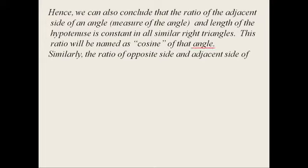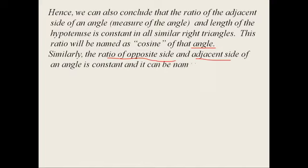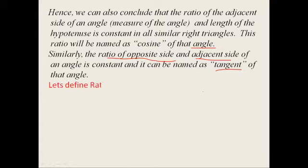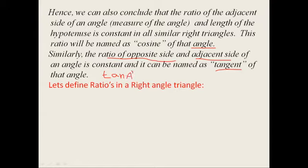Hence we can also conclude that the ratio of the adjacent side of an angle to the length of the hypotenuse is constant in all similar right angle triangles. This ratio is named cosine of that angle. There is no meaning for cosine without an angle. Similarly, the ratio of the opposite side to the adjacent side of an angle is constant and is named tangent of that angle. So here we are discussing three trigonometric ratios: sine, cosine, and tangent. Tangent is written as tan theta, tan A, or tan X. The full name is tangent but the shortcut is tan.